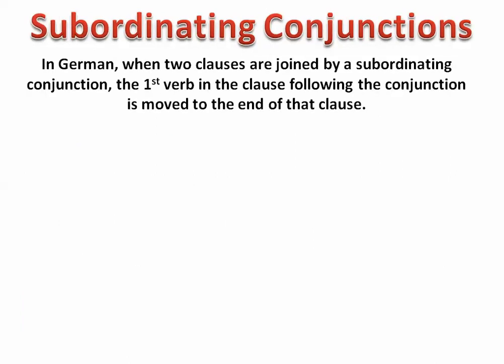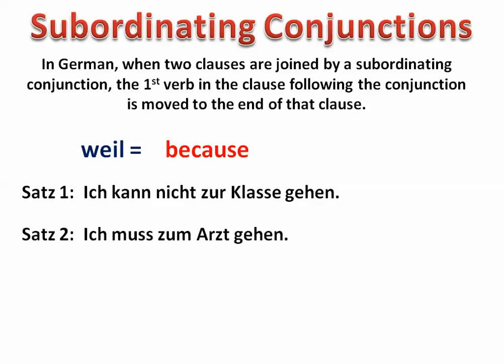Now we're going to look at subordinating conjunctions. These are the ones you have to watch out for in German because they do affect the word order of the clause that follows them. For this example, we're going to use 'weil,' which is the subordinating conjunction that also means 'because.' So you have two conjunctions that mean 'because' — 'denn,' coordinating, and 'weil,' subordinating. I'm going to show you how this works with the same two sentences.